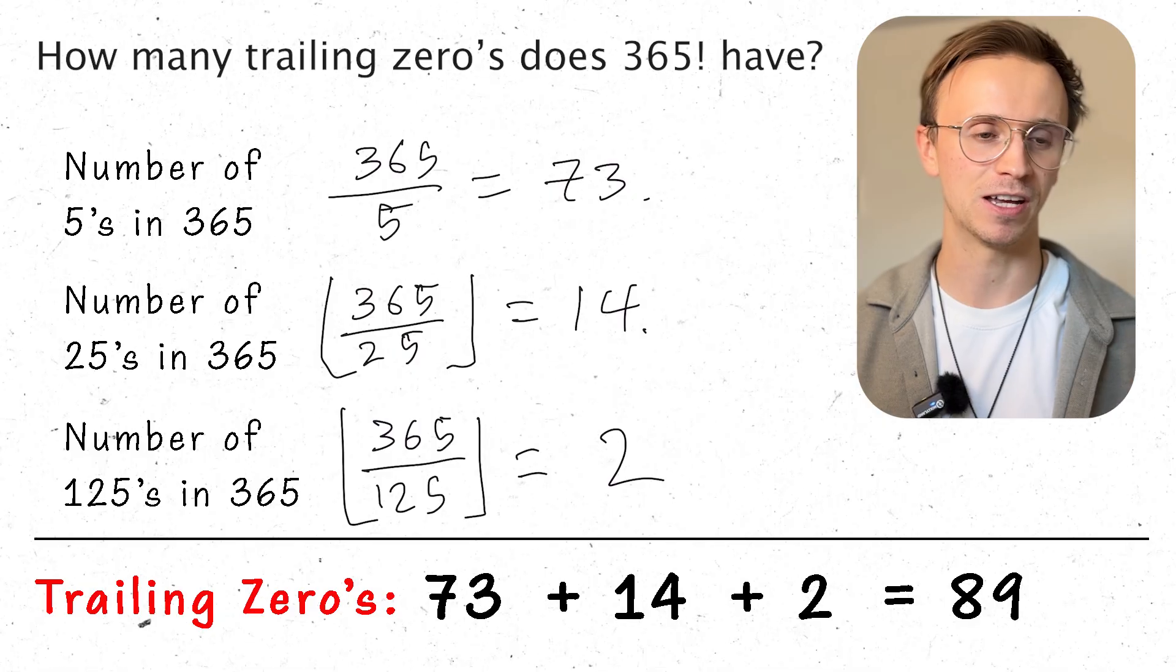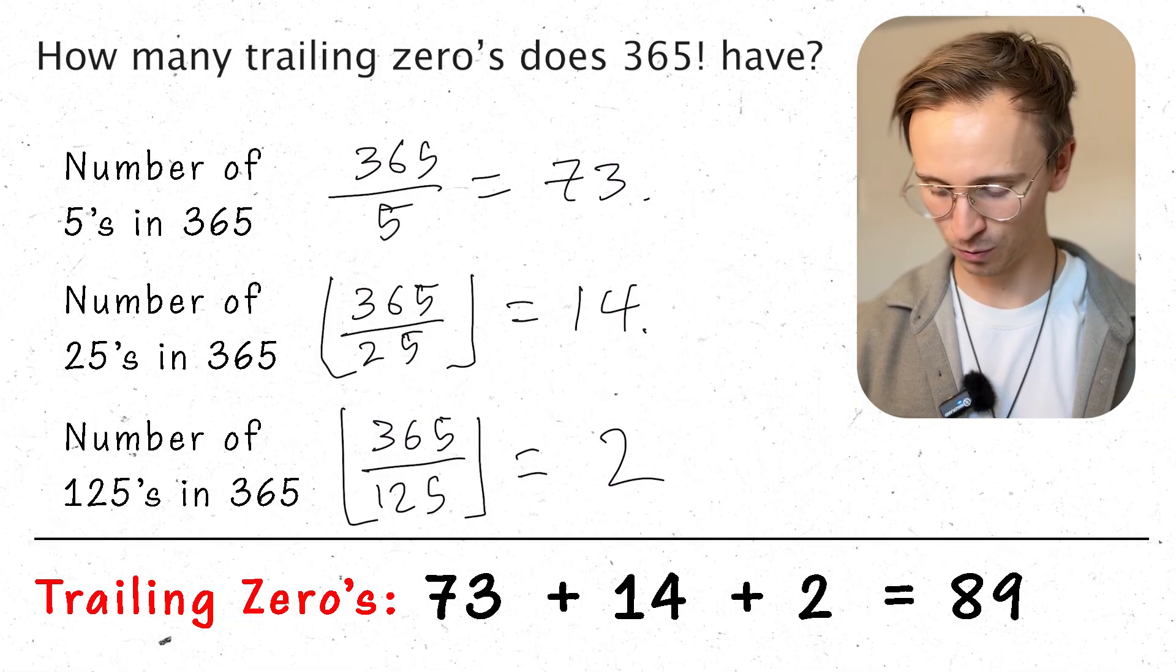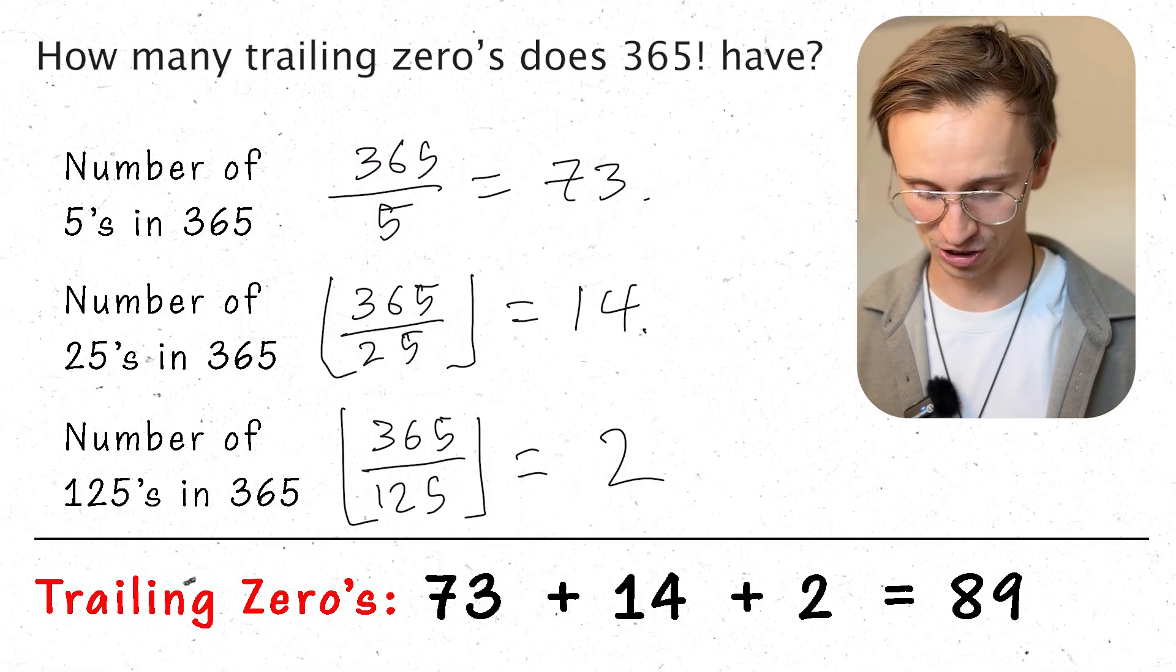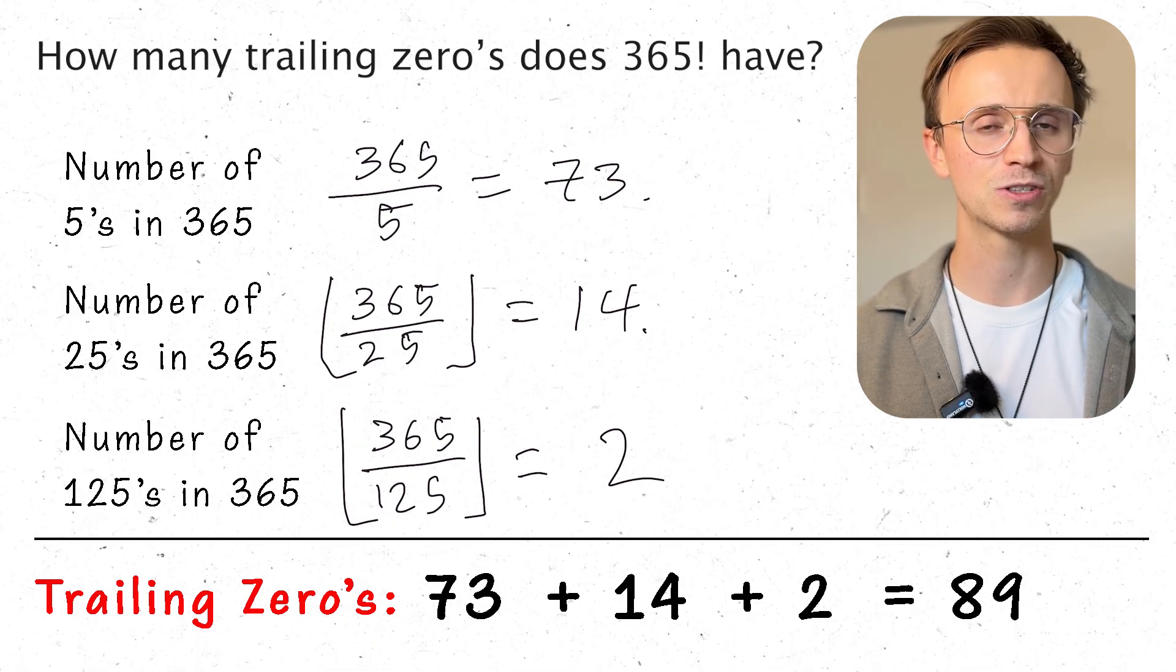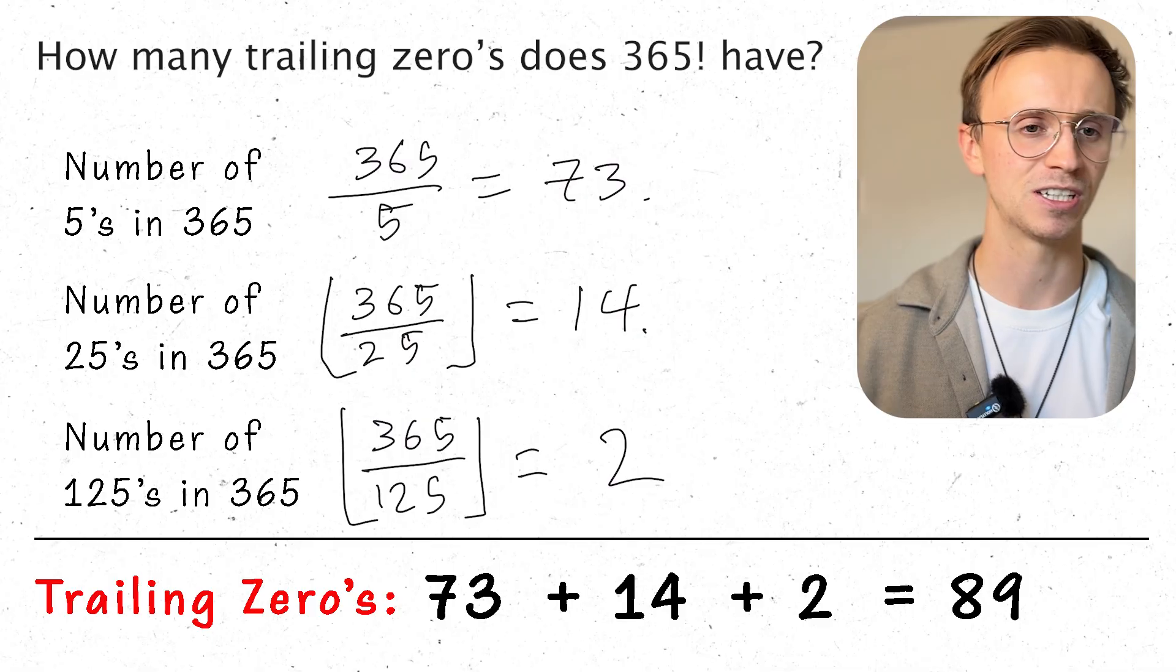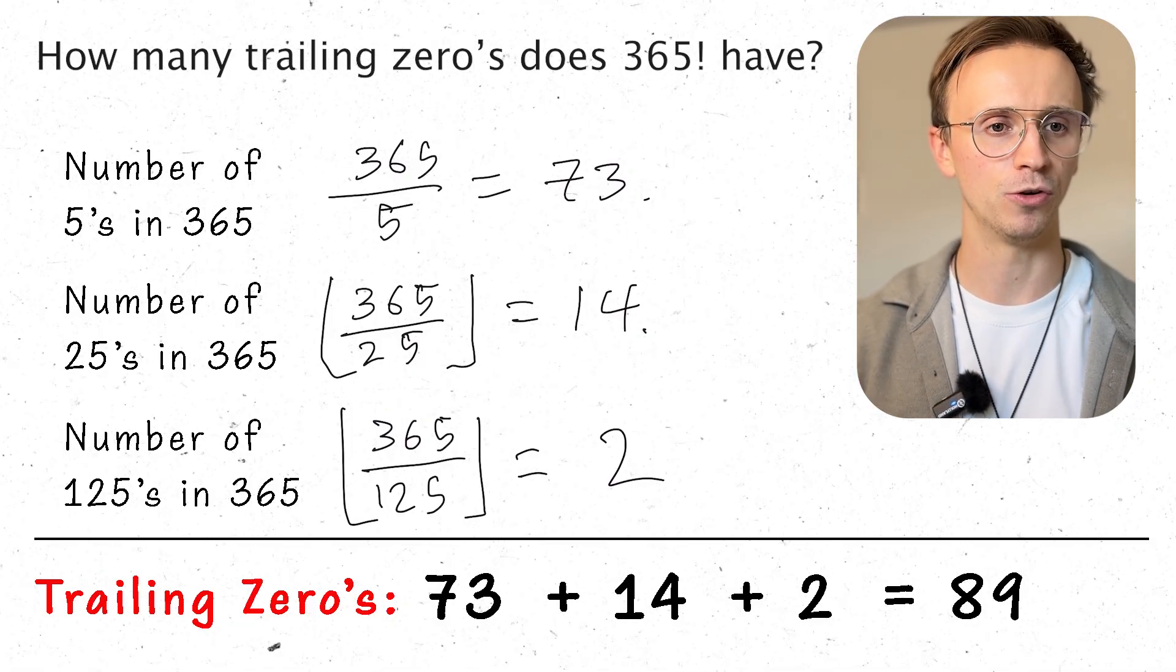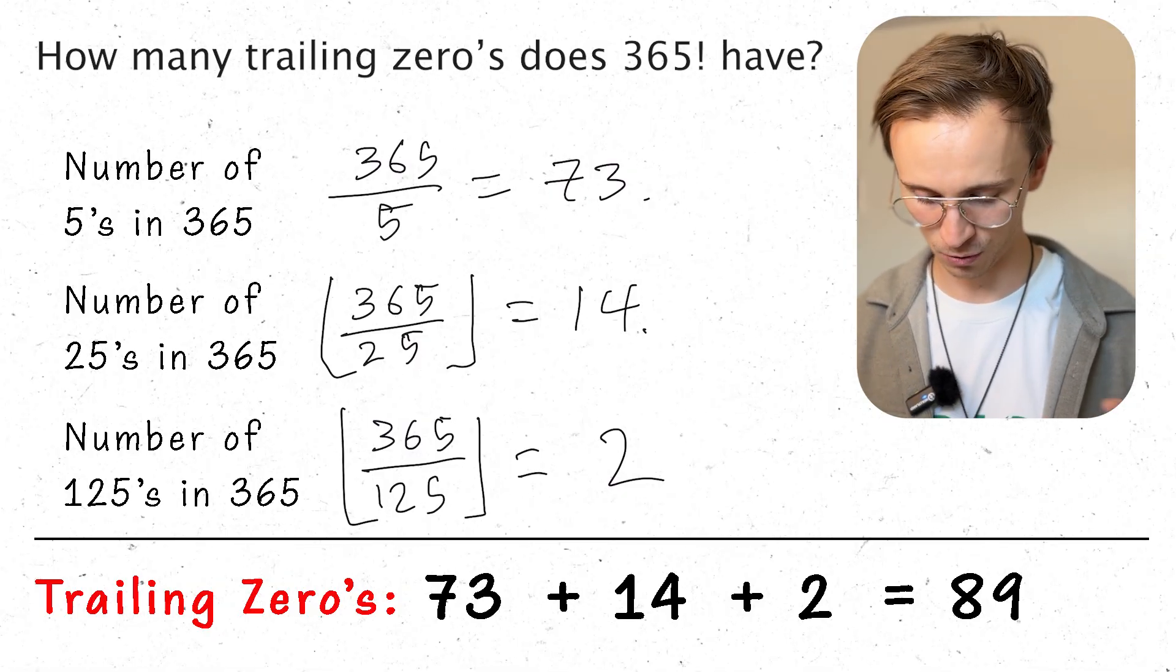And now I'd like to check this by plugging in a calculator. But generally the calculators wouldn't do 365 factorial, way too big a number. But if you do some scientific calculators online, you can actually show that there is 89 trailing zeros, which is an insane number of trailing zeros. So this one's really interesting. It's about looking at the factors and realising that 365 is just them all multiplied together. I can manipulate them how I want. Work out how many 5s I've got, how many 25s I've got, how many 125s I've got. Really interesting problem.